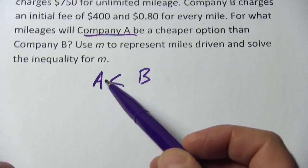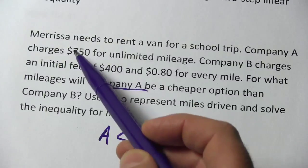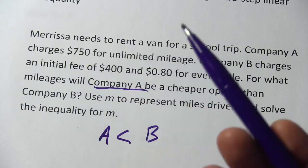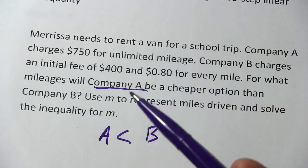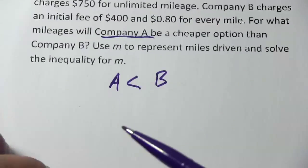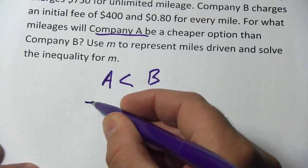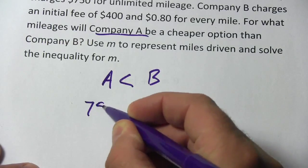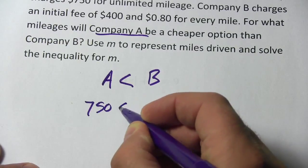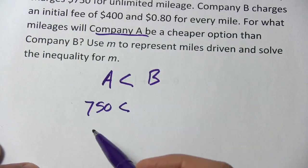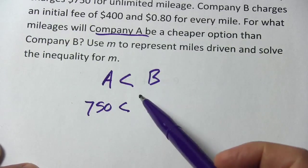A is easy. A is just $750 — whether you drive one mile or a thousand, it's $750. So we just put in $750 here, and we have our less than sign.